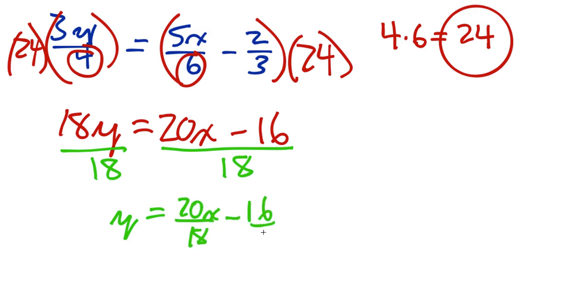Then I get y equals 20x over 18 minus 16/18. One thing about this method is in most cases you're going to have to check to make sure you have lowest terms.